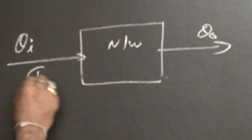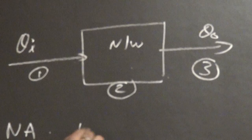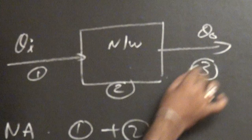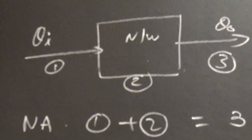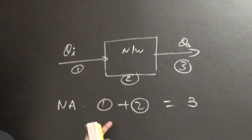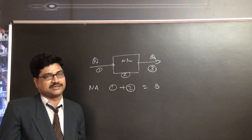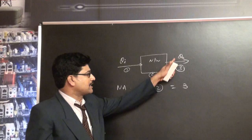In network analysis, there are three quantities: excitation, network, and response. You know two of them, and you have to determine the third one. The two known parameters are given and the unknown parameter is determined — the responses are observed by giving known excitation to the known network.